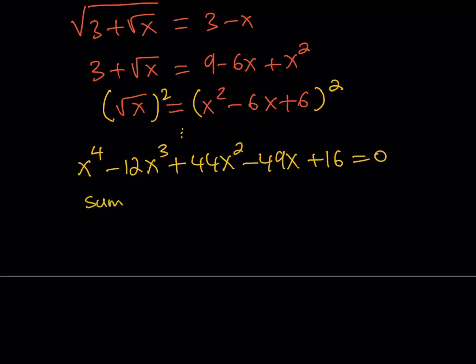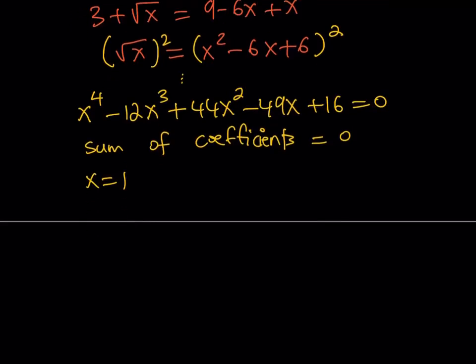So sum of coefficients is equal to zero. What is that supposed to mean? It means x equals one is a solution, and that means that x minus one is a factor. So what we can do is we can turn this into the product of x minus one and a cubic, which is somewhat easier to solve.